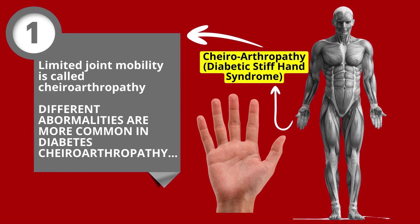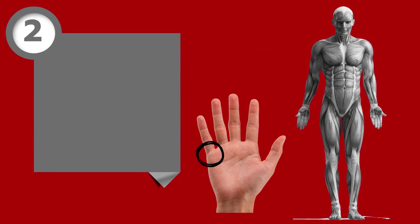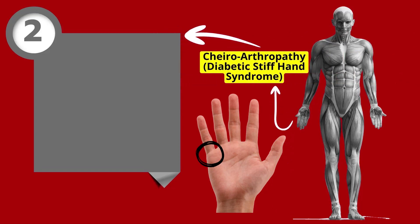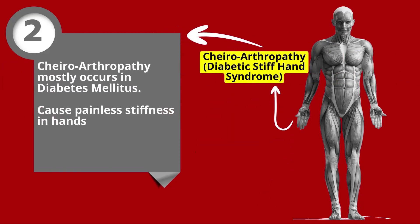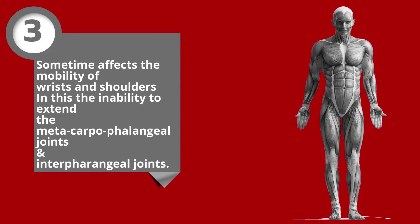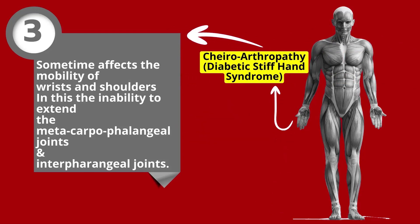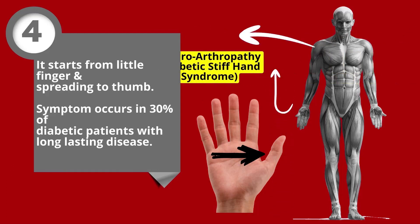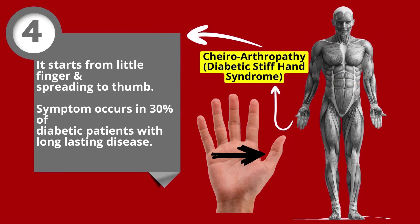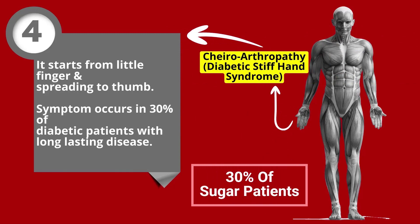Like other diseases of the hands, chiroarthropathy also begins to manifest itself at a certain age in patients affected by diabetes. Its specialty is that when stiffness is felt in the joints of the hands during movement, pain is not felt during that time. Palm and finger joints are more affected, and sometimes it also affects the ankle and shoulder joints. Stiffness between the joints starts from the little finger and spreads to the thumb. Chiroarthropathy is found in 30% of diabetic patients.